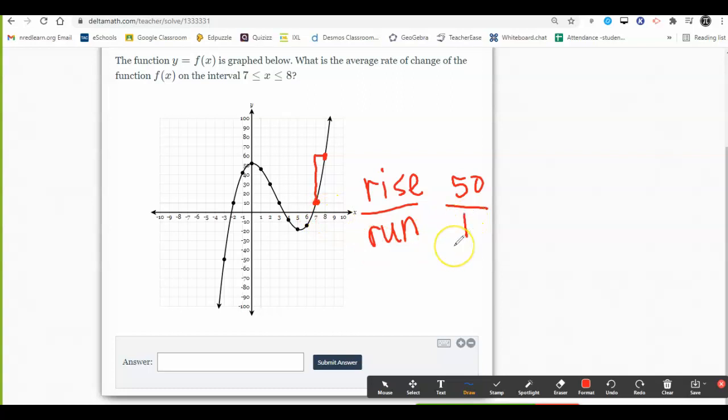But I could also create my own table of points. I create the table using the beginning and ending interval values. Then from there, I get the y values from looking specifically at the graph.